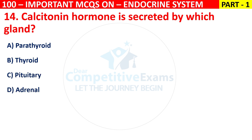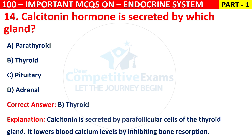The correct answer is B, that is thyroid. Calcitonin is secreted by parafollicular cells of the thyroid gland. It lowers blood calcium levels by inhibiting bone resorption.